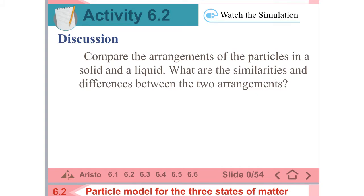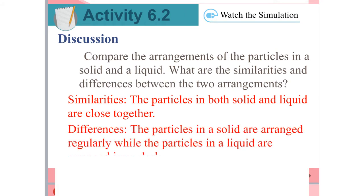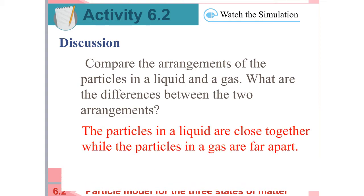Let's compare the arrangements of the particles in a solid and a liquid. What are the similarities and differences between the two arrangements — in a liquid and a gas? For similarities, the particles in both solid and liquid are close together. The differences will be that the particles in a solid are arranged regularly, while the particles in a liquid are arranged irregularly. Comparing the arrangements of the particles in a liquid and a gas — the particles in a liquid are close together, while the particles in a gas are far apart.